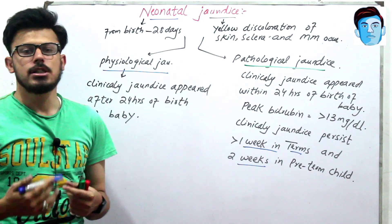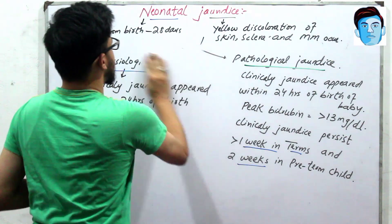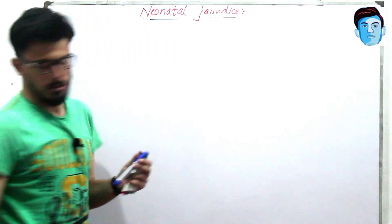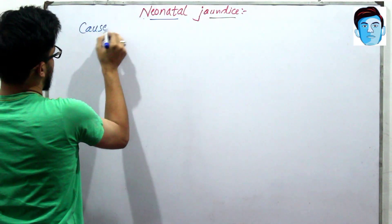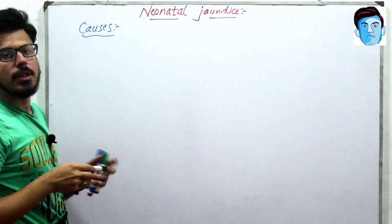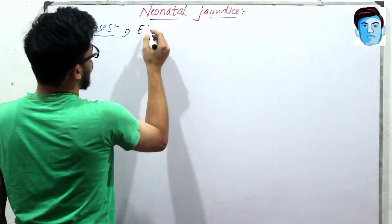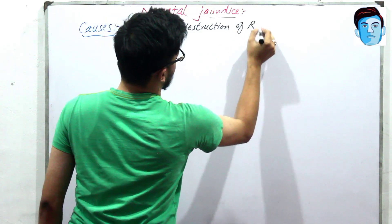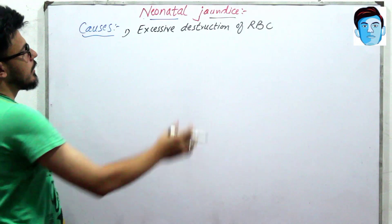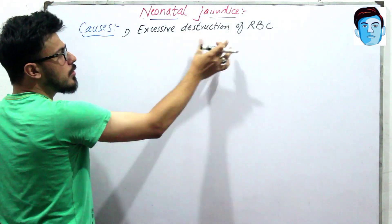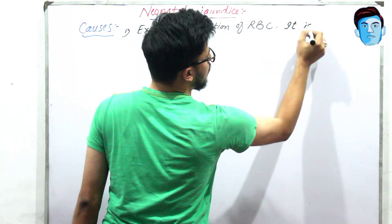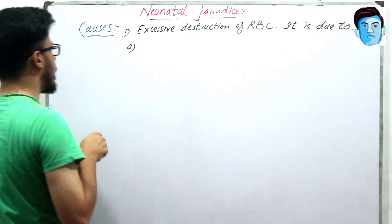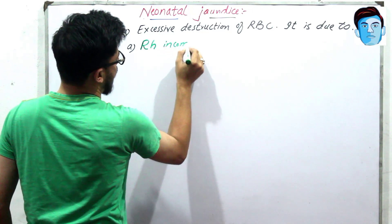Now coming toward the important causes of Pathological Jaundice. The most common cause of Pathological Jaundice is excessive destruction of RBC. The first cause of excessive RBC destruction is RH incompatibility.